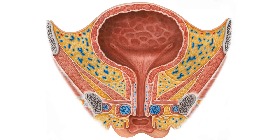Now one important thing before we continue is that we're going to be mainly exploring this image that you now see on the screen, which is essentially a coronal section of the female urinary bladder. You see a lot of structures here which we will be highlighting to understand what's happening around the urinary bladder, but this is the urinary bladder as you can see here.